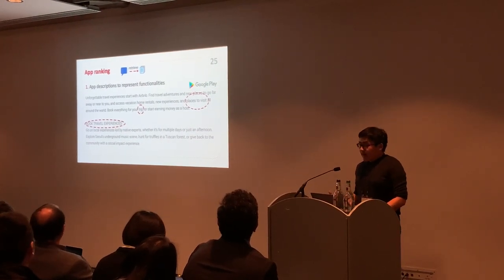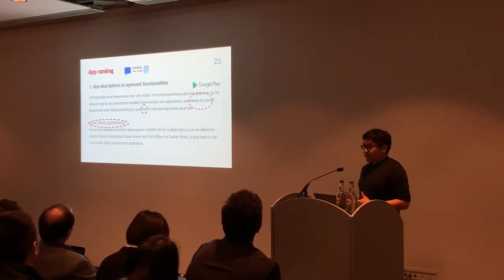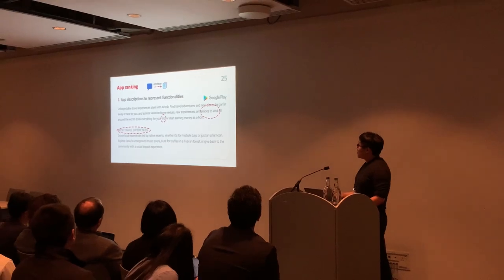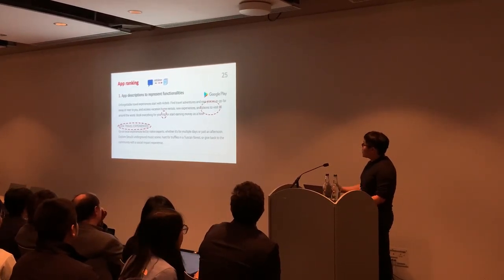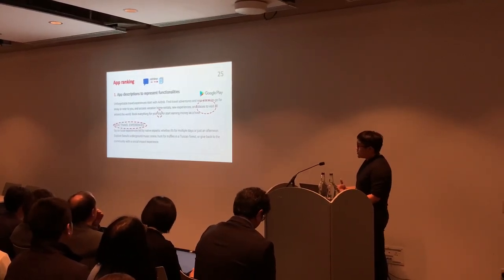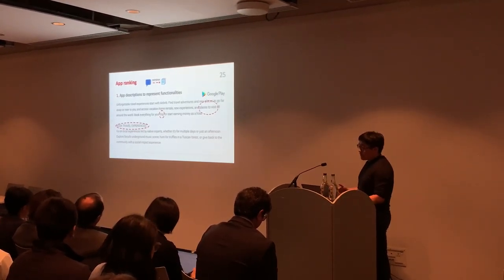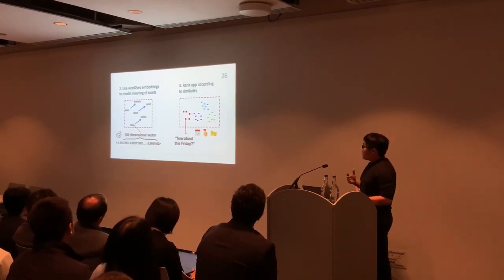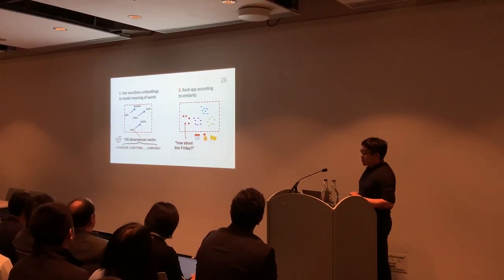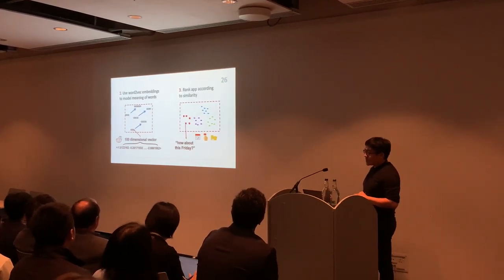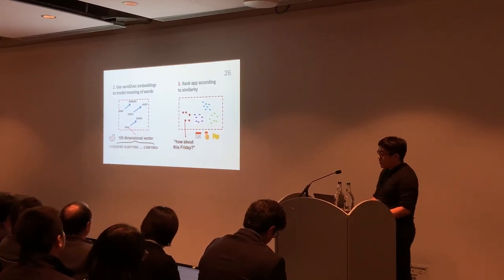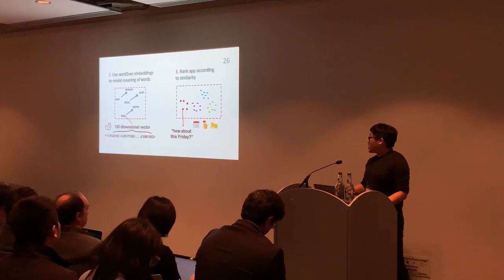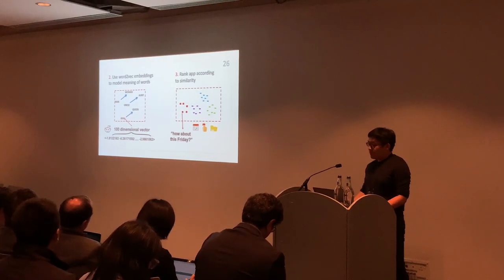For app ranking, on the query side, we use the conversation and app descriptions as a search space in an information retrieval model. Each app has a description published in the app store, such as Google Play, which developers use to describe app features — an ideal resource to represent app functionality. We model words in app descriptions and conversations using word vectors of 100 dimensions, so semantic relationships between words can be measured. We then compare the similarity between the current conversation against all app descriptions to pick the most relevant app.